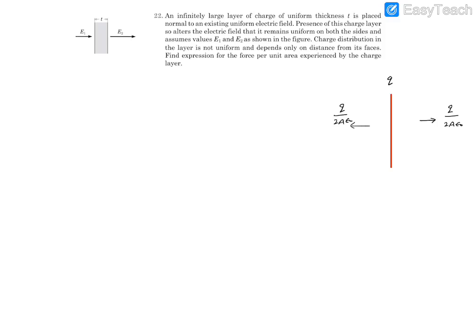Since there are so many plates, the field at any location does not depend on the distance from the plate. We can therefore treat the entire layer as a single plate with a total charge Q. The field on the right side will be in this direction and equal to Q/(2Aε₀), and on the left side it will also be Q/(2Aε₀) due to the total charge of this layer.